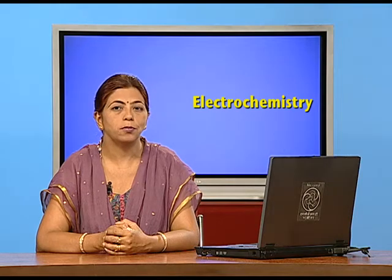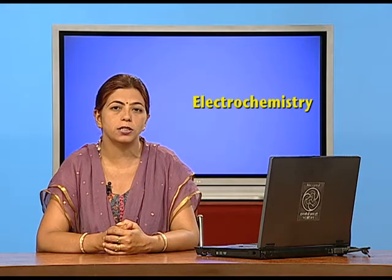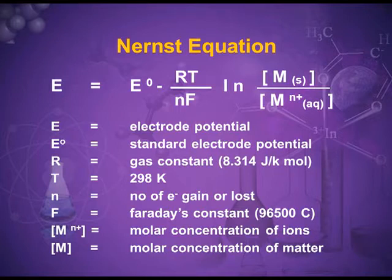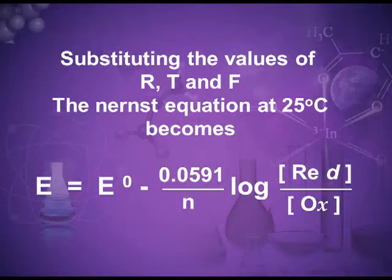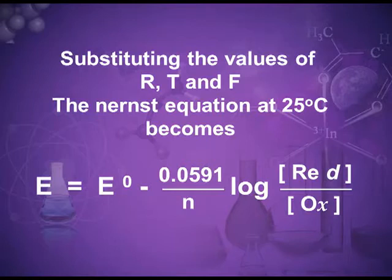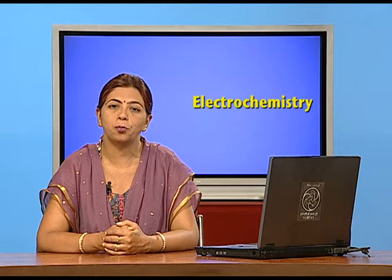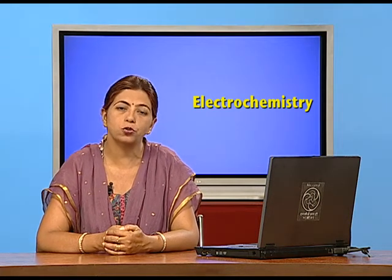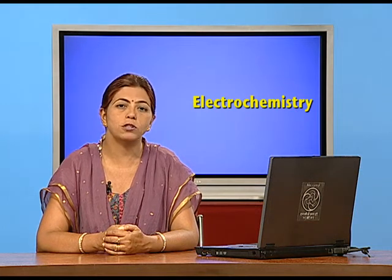The concentration of M solid means the concentration of the reduced state, and concentration of M n-plus means the concentration of the oxidized ions or the oxidized state. When we substitute the values of R, T, n, and F, we get the Nernst equation as E equals E naught minus 0.0591 upon n, log of the concentration of the reduced state divided by the concentration of the oxidized state. The natural logarithm has been changed to base 10. The value of n will change according to the redox reaction.